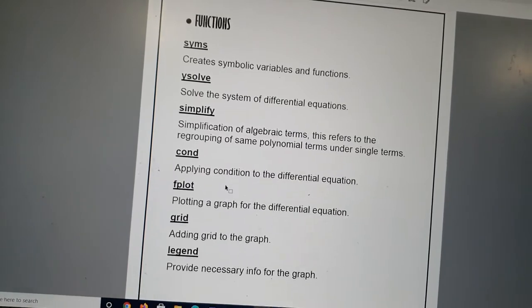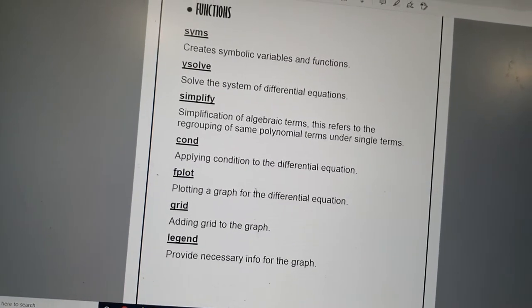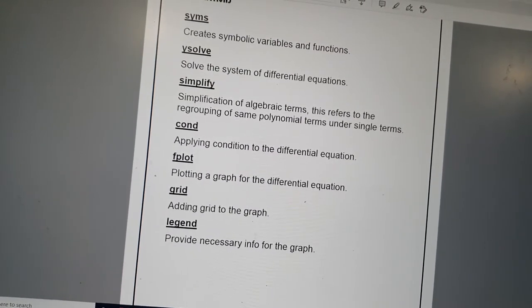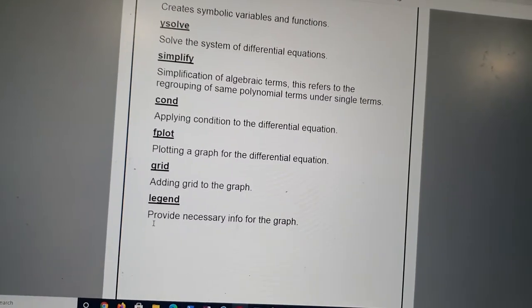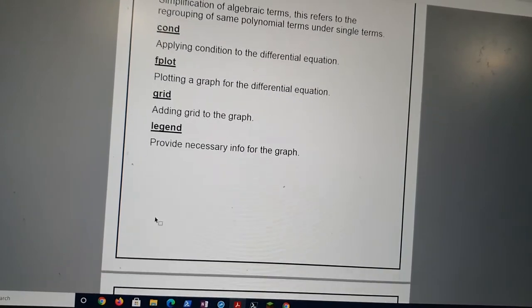The cond value is basically the condition value, applying the condition to different equations. Fplot plots a graph for the differential equation. Grid adds the grid to the graph. The legend provides extra information about the graph, the necessary information.